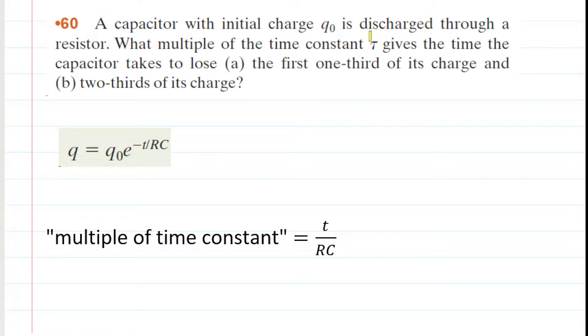In this question, we have a capacitor that is discharging, and the equation that governs the discharging of a capacitor is given right here. We have the charge on the capacitor equals the initial charge multiplied by this exponential term, which includes time and RC.